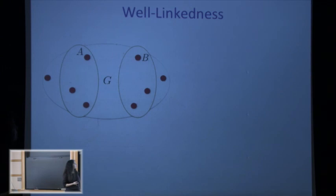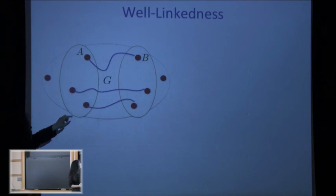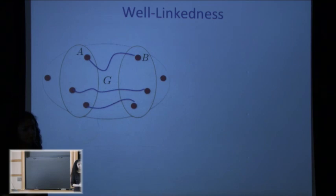For example, if I take two equal-size subsets of these vertices, I want to be able to connect every vertex on the left to every vertex on the right by disjoint paths. I'm not asking about a specific matching — all I want is that every vertex on the left is connected to some vertex on the right and vice versa by disjoint paths.